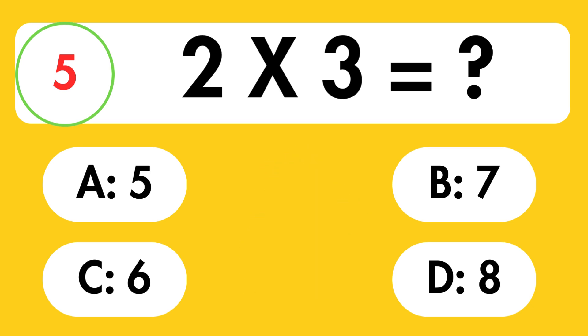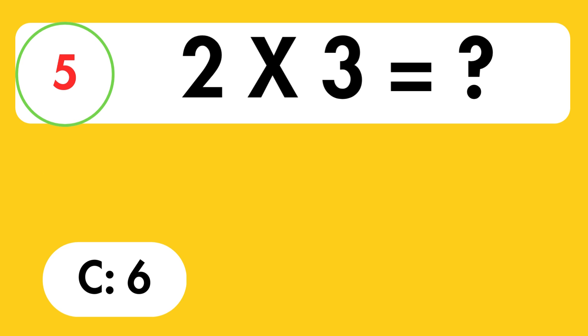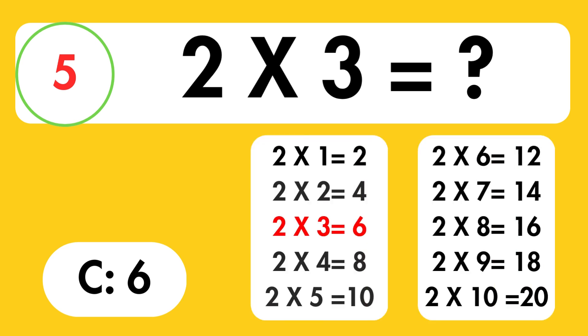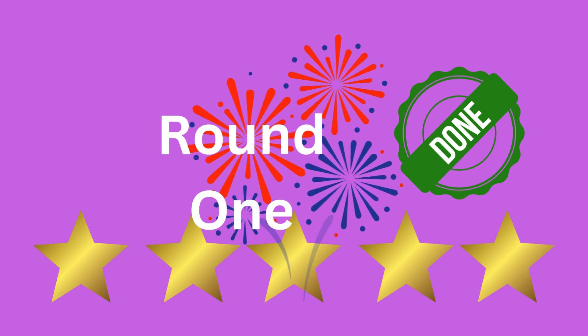Time's up. The answer is 6. 2 multiplied by 3 is equal to 6. Fantastic job on round one! How many stars did you collect? Remember your score, we'll add them all up at the end.